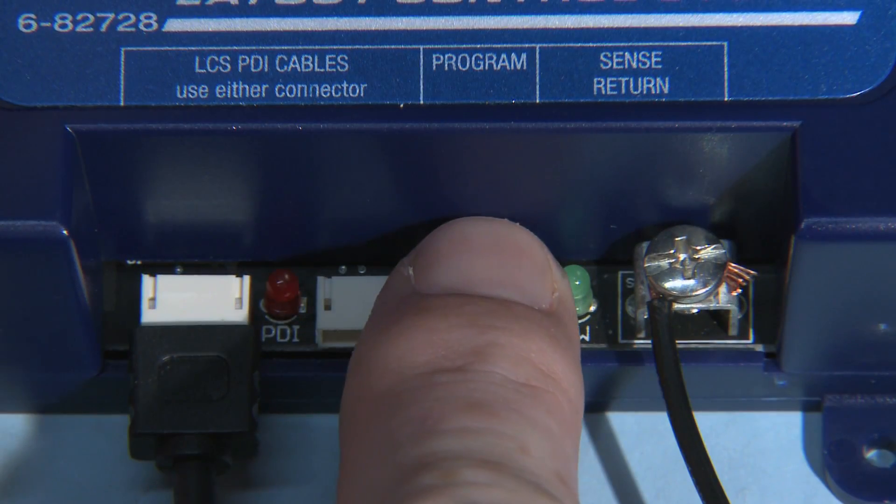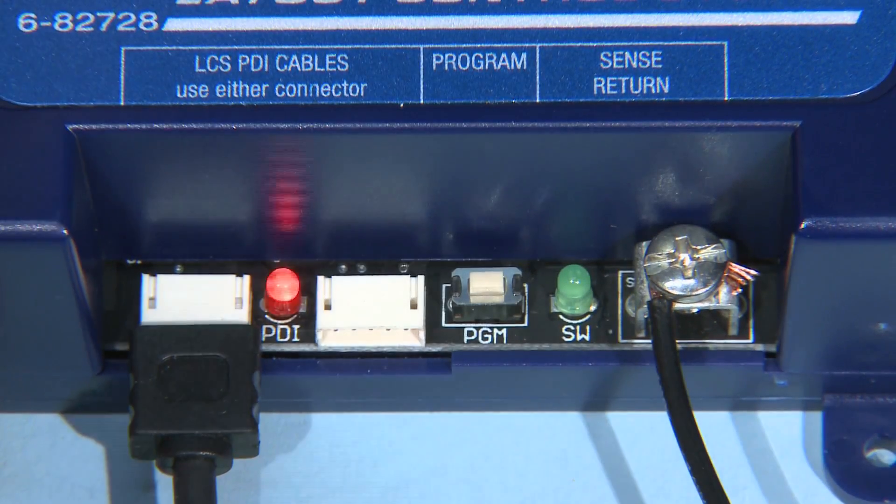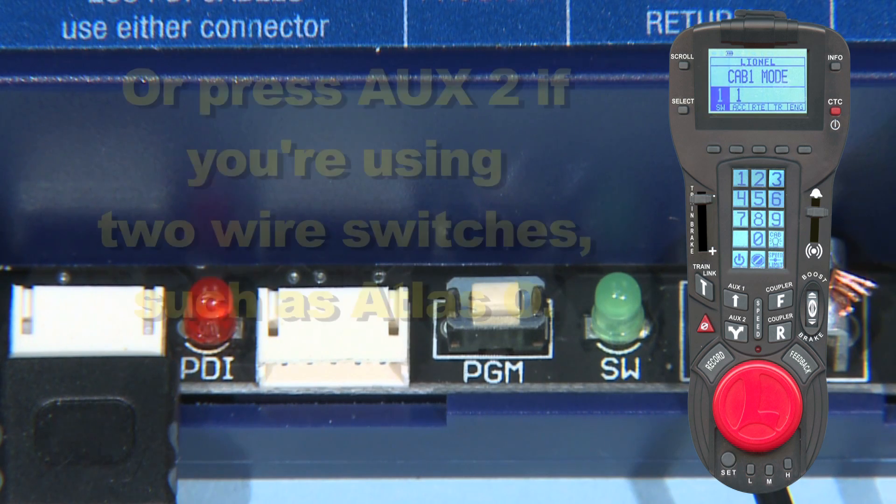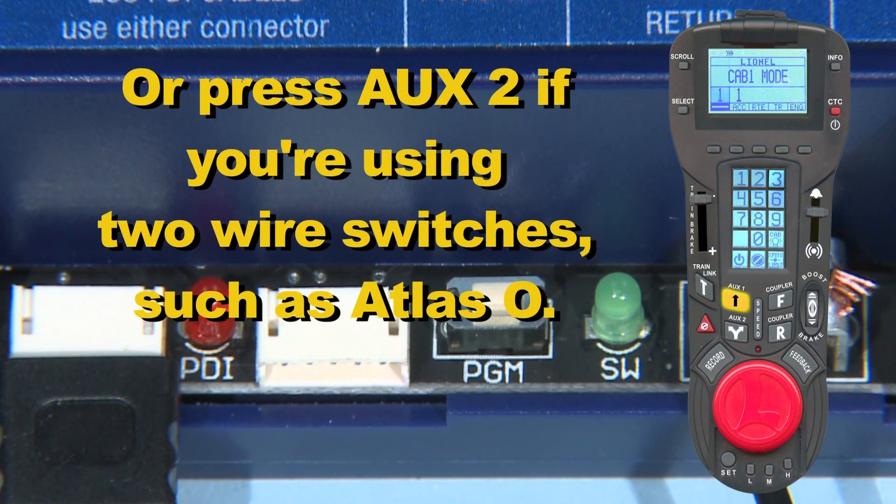Press the program button on the module, followed by SW on a CAB2. Then the first ID number that matches the ID number of the first switch connected, and press SET. Finally, press AUX1 for Lionel switches.